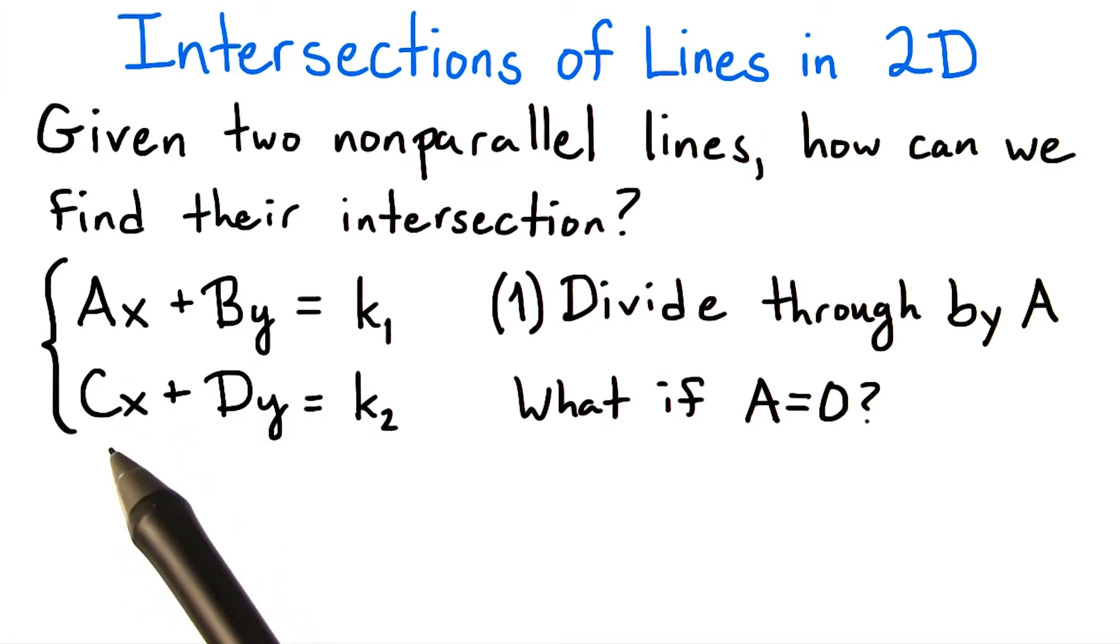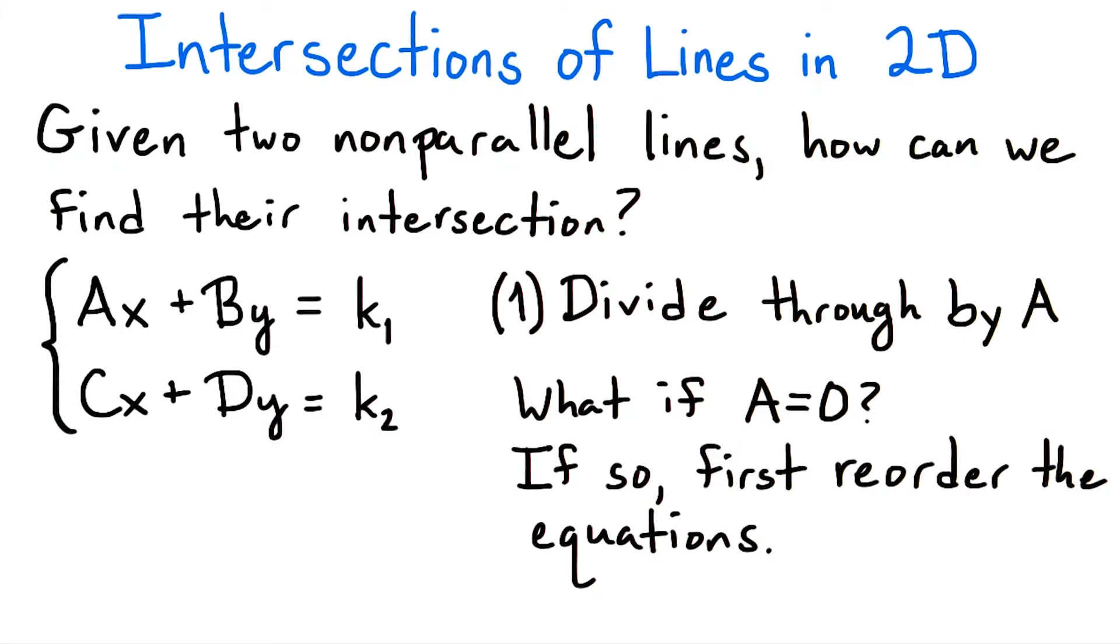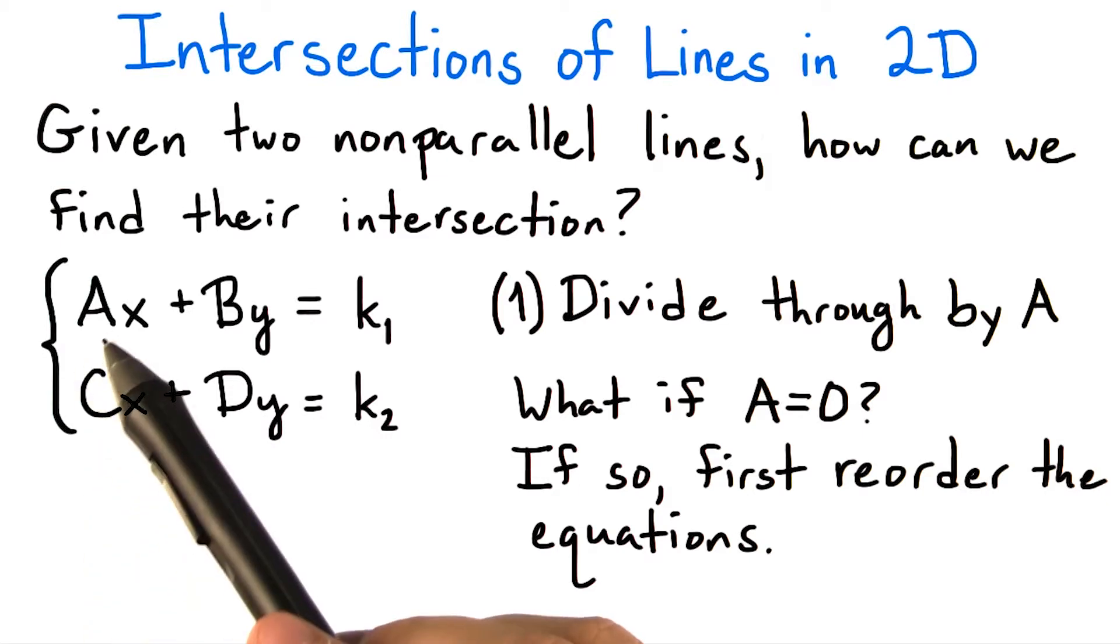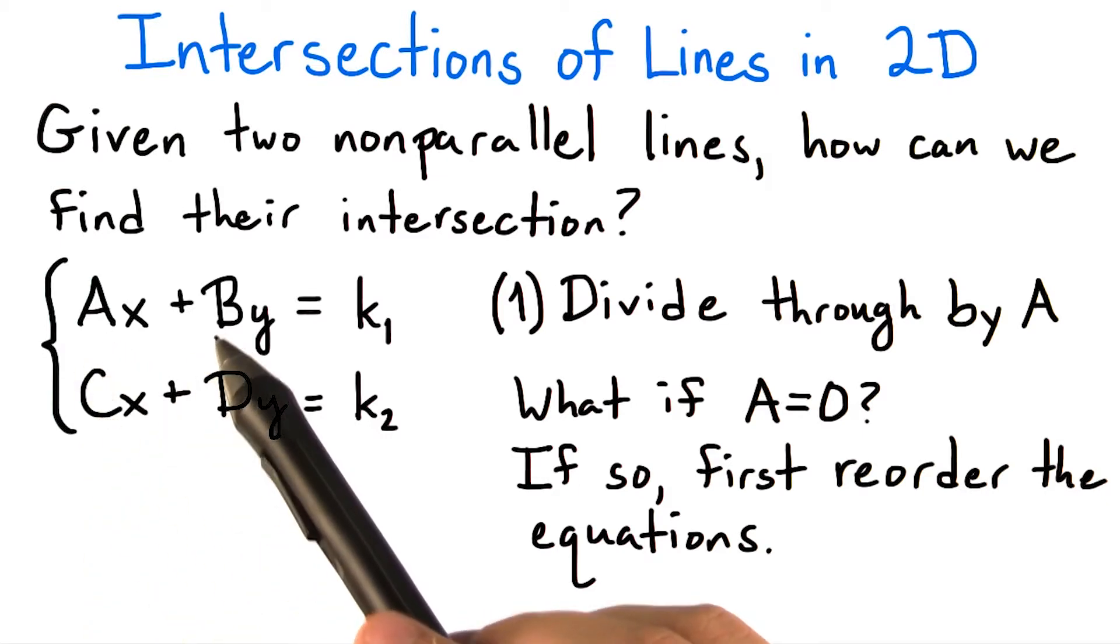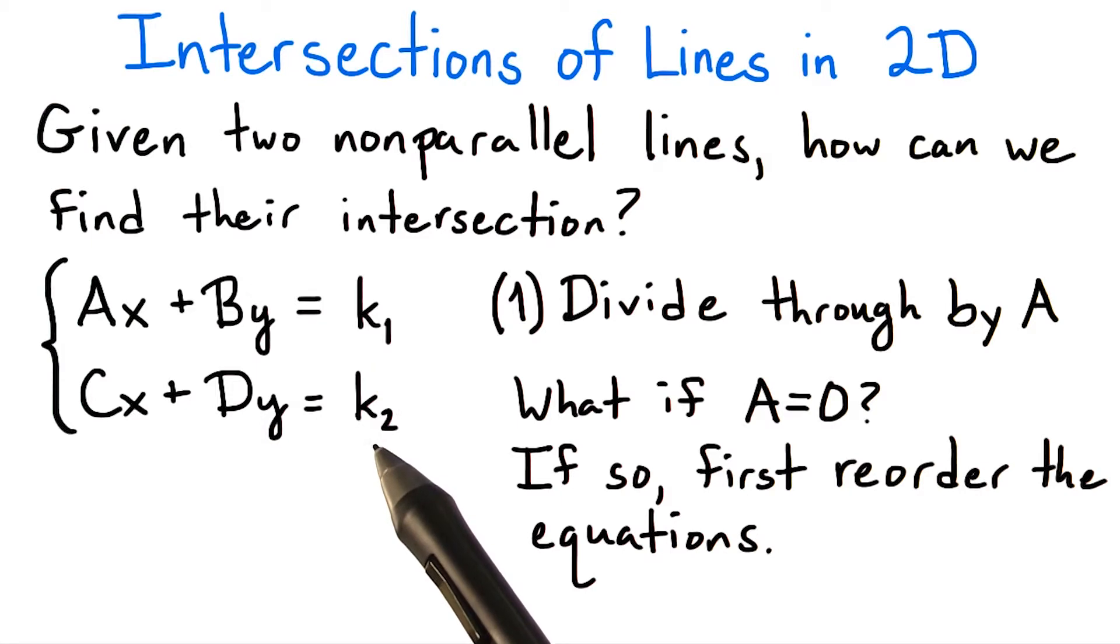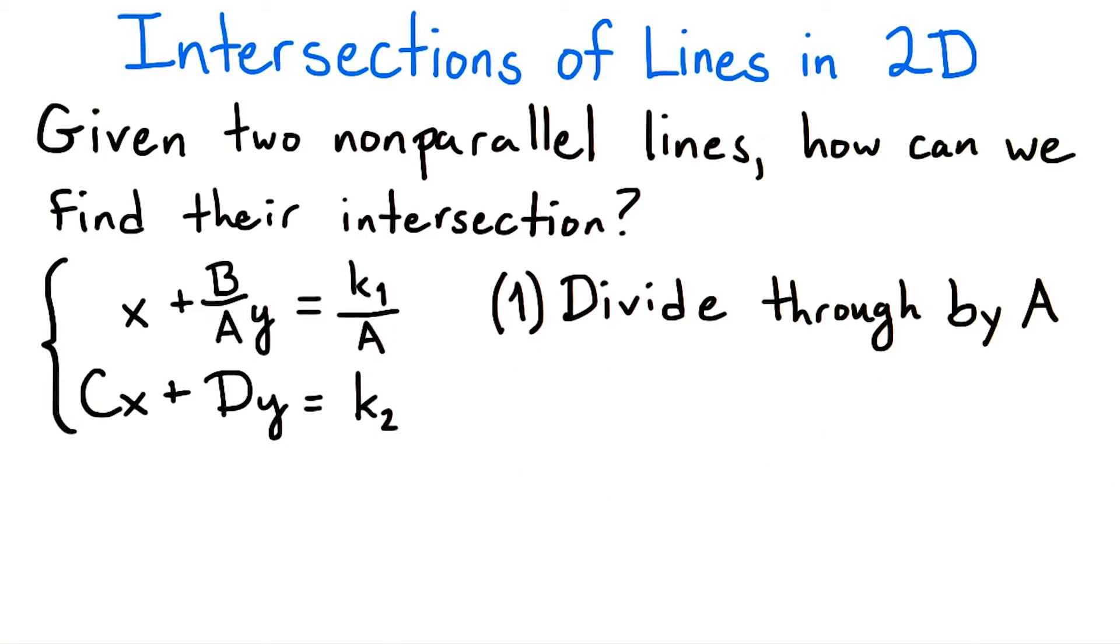So that means either a or c has to be non-zero. To make matters simpler, let's just do the following at the beginning of the whole procedure. We check to make sure a does not equal 0. If so, then we swap the order of the two equations. So a and c would swap places, b and d swap places, and k1 and k2 also swap. Then we can always assume that a does not equal 0. So with that assumption that a is not 0, we can go ahead and divide through by a, giving us x plus b over a times y equals k1 over a.